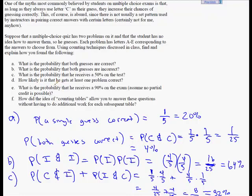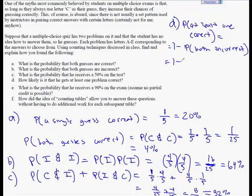How likely is it that he gets at least one problem correct? Well, again, good practice. Probability of at least one correct is equal to one minus the probability of both incorrect. Well, that's equal to one minus the probability of both incorrect is 64%. And that works out to be 36%. 36% chance that you get at least one correct.